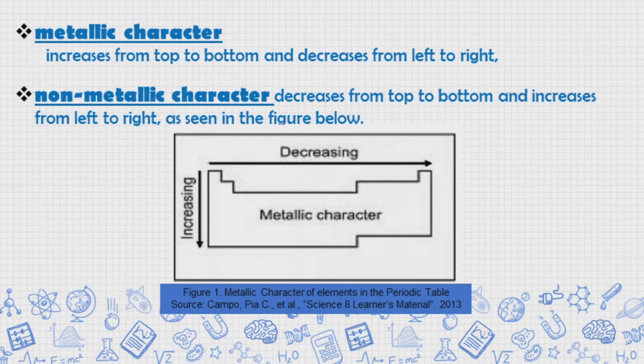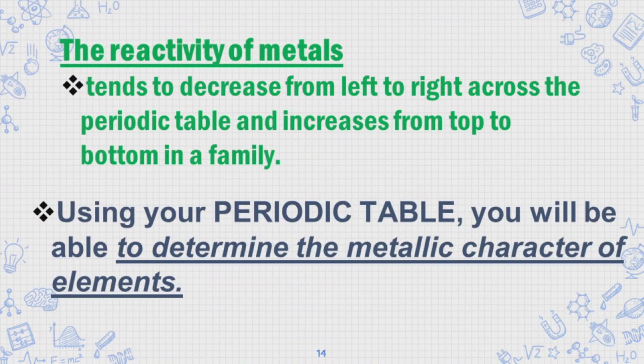The reactivity of metals tends to decrease from left to right across the periodic table and increases from top to bottom in a family or group.